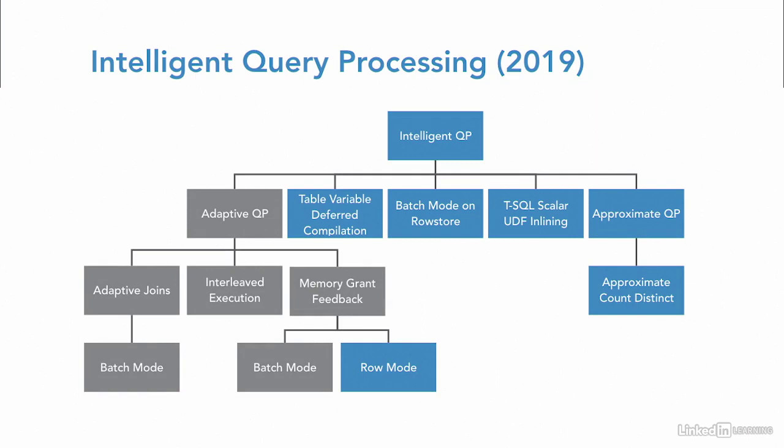These include the expansion of memory grant feedback to row mode operations in addition to batch mode operations in query execution plans. It also includes table variable deferred compilation, the ability to run batch mode operations on row store data, T-SQL scalar UDF inlining, and the approximate count distinct query plan. Let's take a look at each of these new additions.